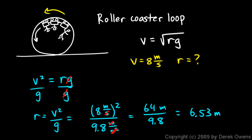If it's going to be moving at 8 meters per second, the radius of the loop should be 6.53 meters. Or you can make the loop a little bit tighter. This would be the maximum. If the loop were bigger than that, then you would need a faster speed for the cars to stay on the track.